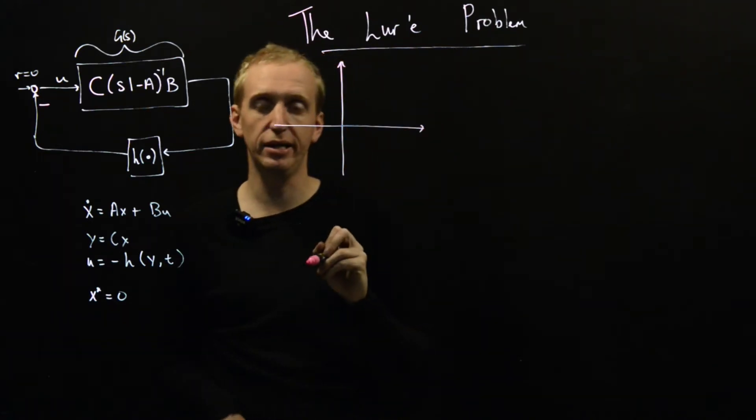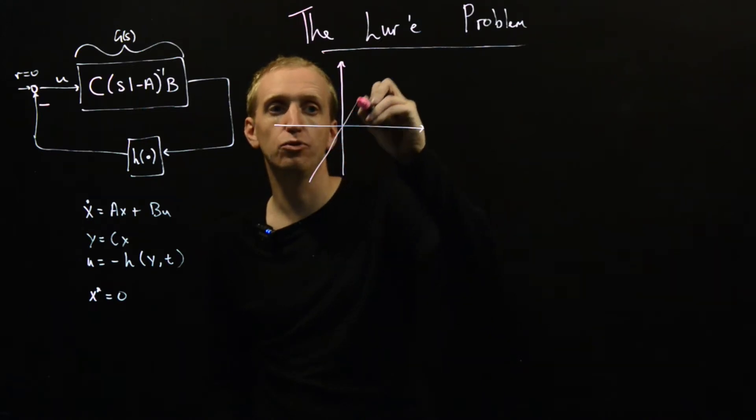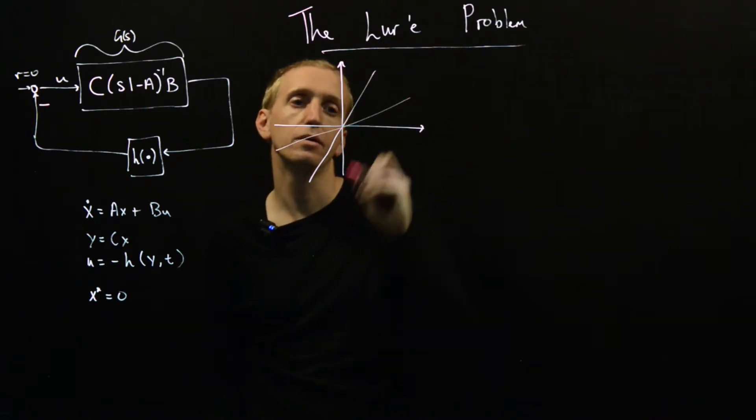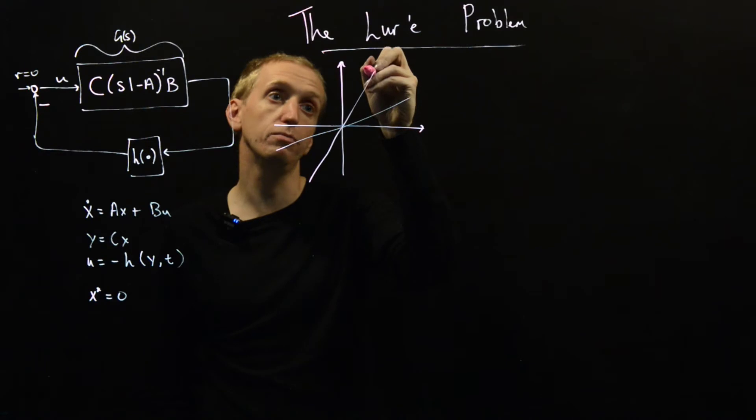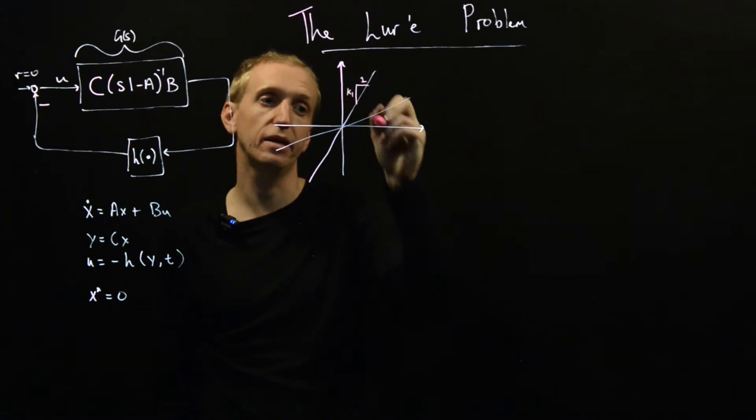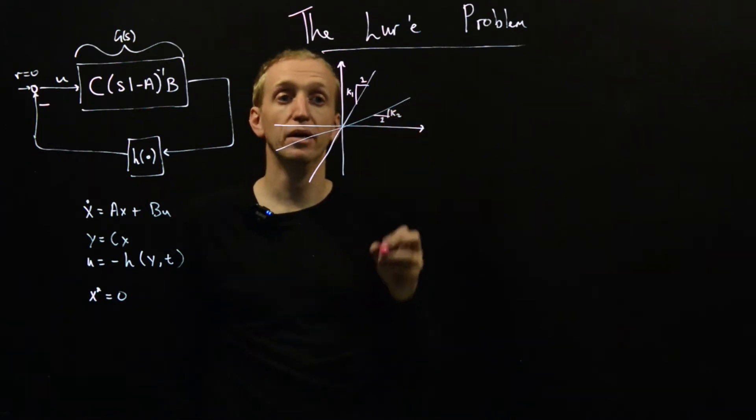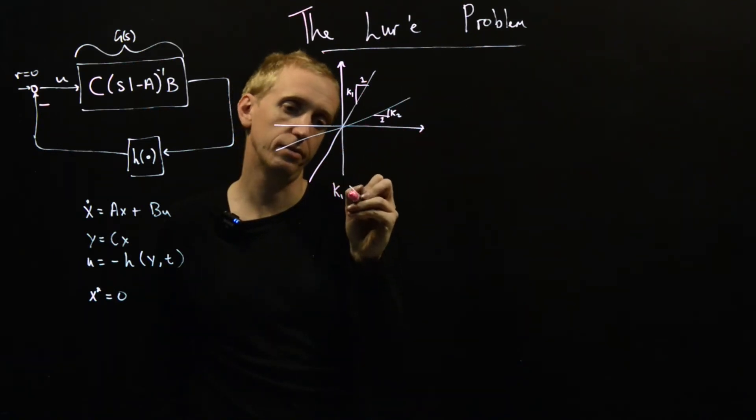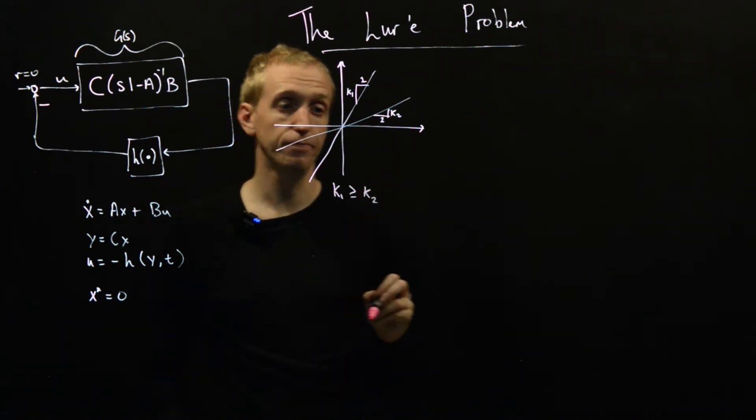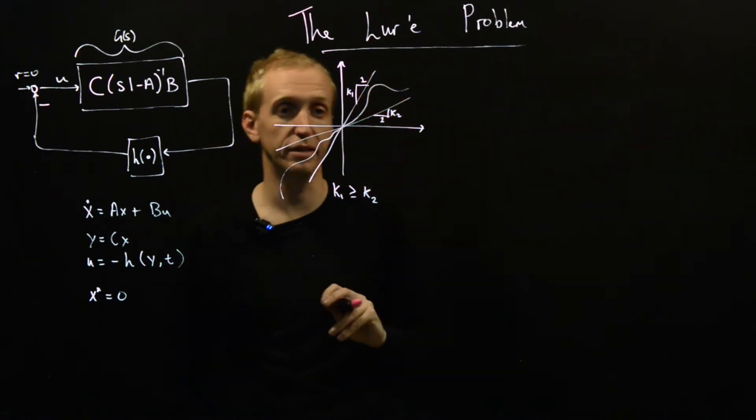And the nonlinear function H lies within what are known as sector bounds. And to do that, we draw on some sector that looks like this, and it's characterized by two curves with two different slopes. And I'm going to call the slope, so I'm going to say that distance is 1, this distance is k1. And similarly, we take a step of 1 into k2. So the slope of this line is k1, the slope of this line is k2. And we've got k1 is greater than or equal to k2. And we're just going to assume that our nonlinear function lies somewhere in this sector.